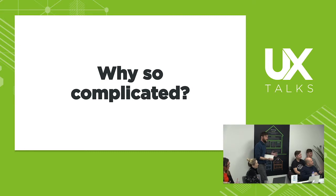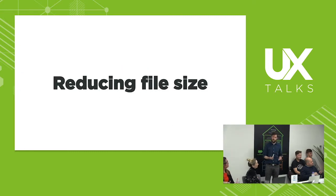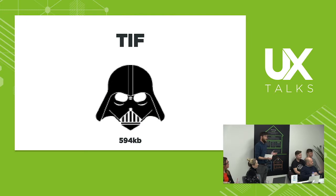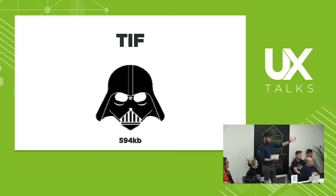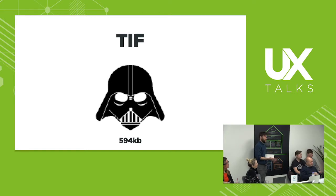You've got to ask yourself, why is it so complicated? Why have you got all these things? Well, the main reason is they're trying to reduce file size. A completely uncompressed bitmap image is pretty big. This TIFF of Darth Vader's head is 594 kilobytes, which is gigantic — given that this isn't its physical size on screen; it's actually something like 100 by 90 pixels. I've zoomed it in so you can see the pixel degradation, but it's still 594K.